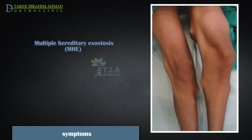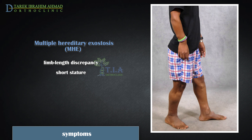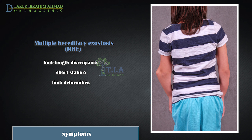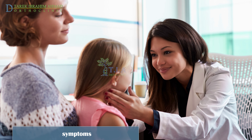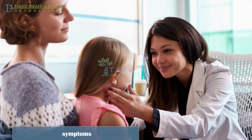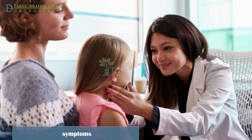Osteochondromas can cause functional problems such as decreased range of motion by causing joint impingement. In more severe cases, multiple osteochondromas (HMO) can affect normal bone growth in children. Children with this condition might have short stature, crooked limbs with angular deformities, or an arm or leg that is longer than the other.